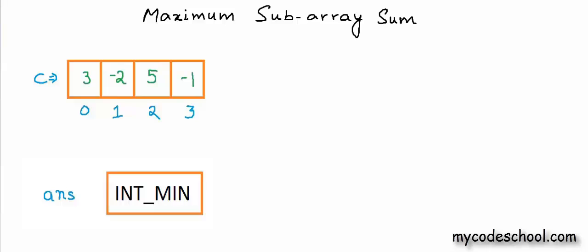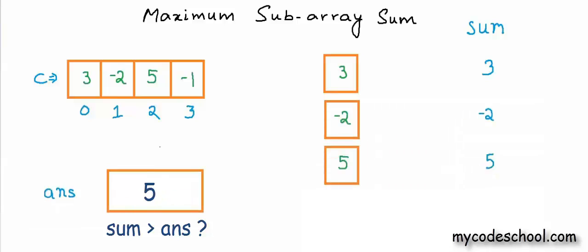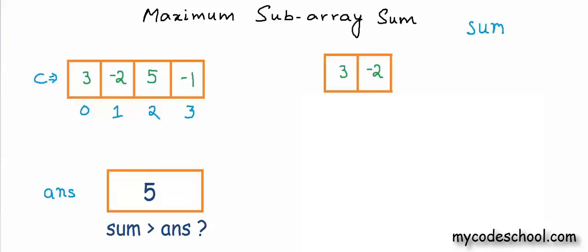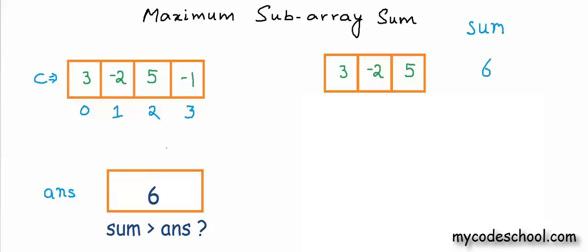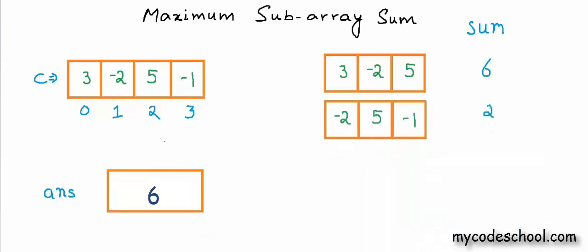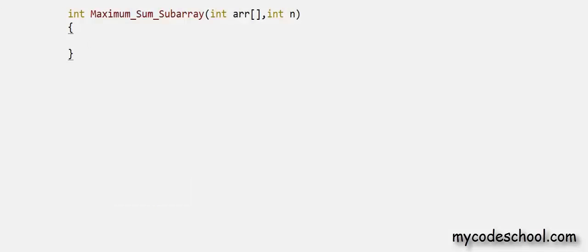We start with subarrays of size 1, find their sum and update ANSWER with the maximum. Then we move on to subarrays of size 2, find each of their sums and update ANSWER. We move on to subarrays of size 3 and finally subarrays of size 4. Now that we have seen the algorithm in action, let us see how we can code this.